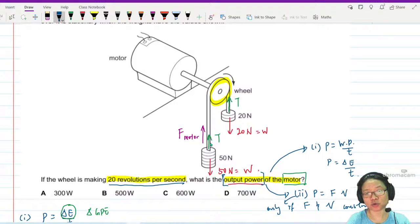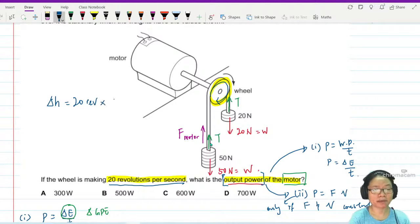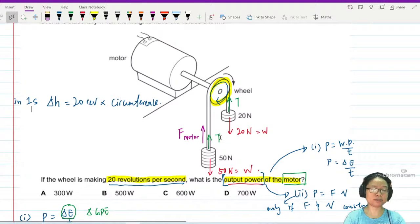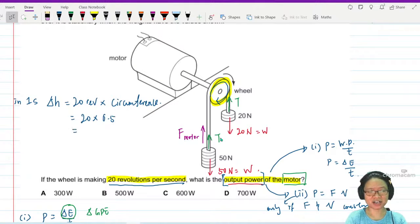So because this thing is going to rotate, it rotates this way. So I will say that the change in height is actually 20 revolution multiplied by the circumference, because one revolution is one circumference. So this is the change in height in one second. 20 revolution multiplied by the circumference. So I will take 20 multiplied by circumference is 0.5. This is 10 meter.